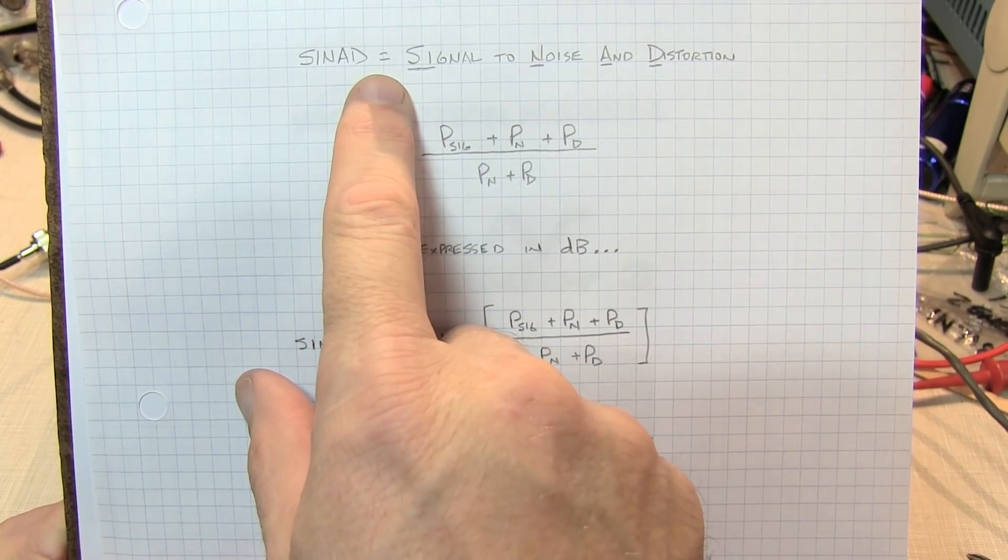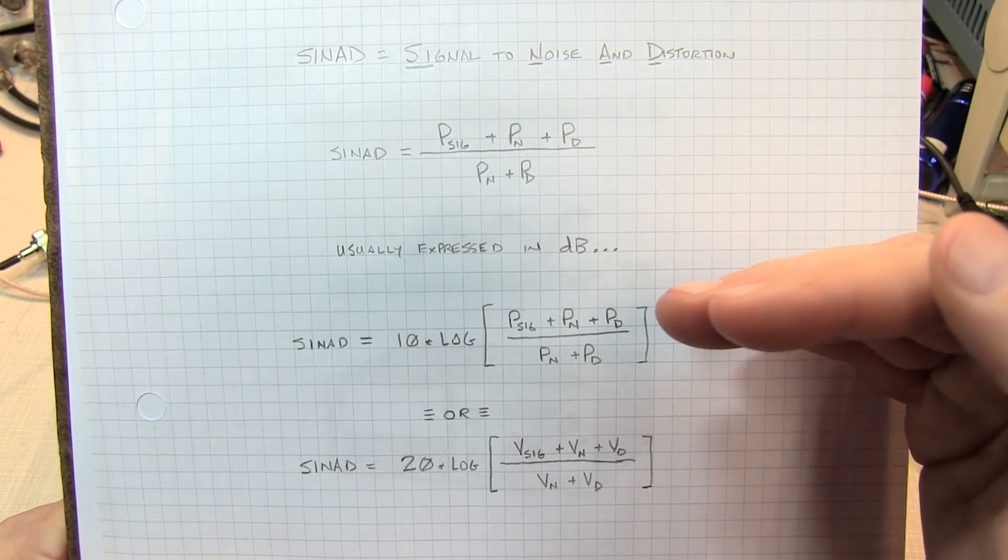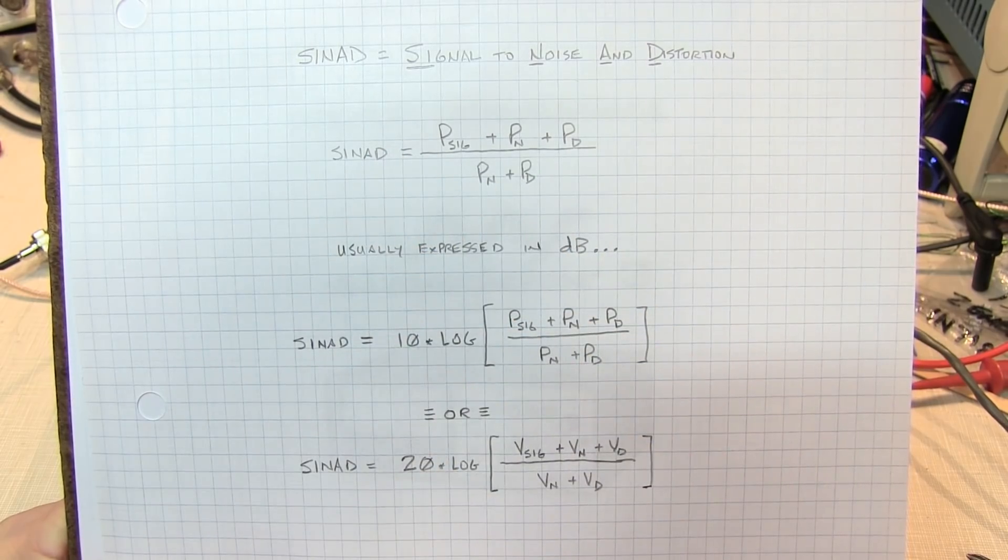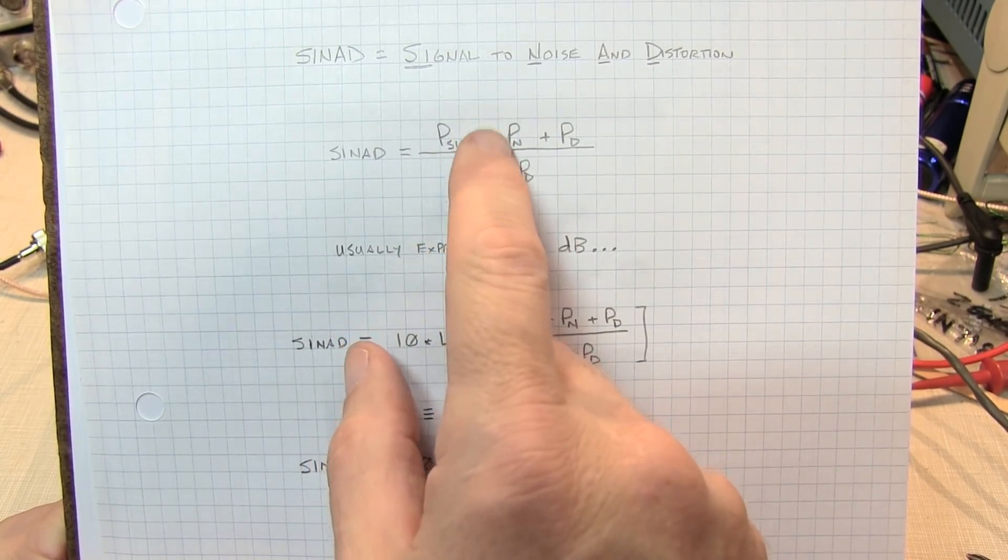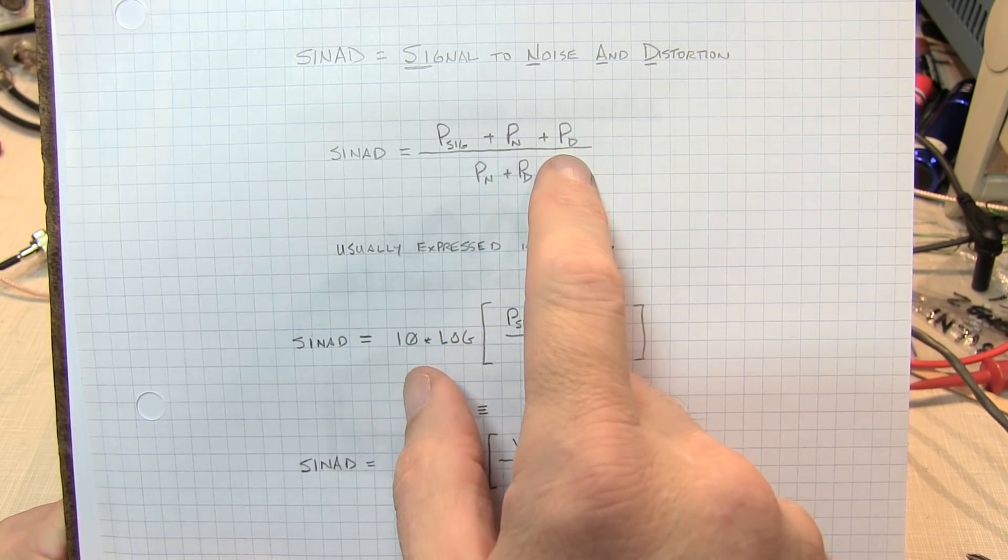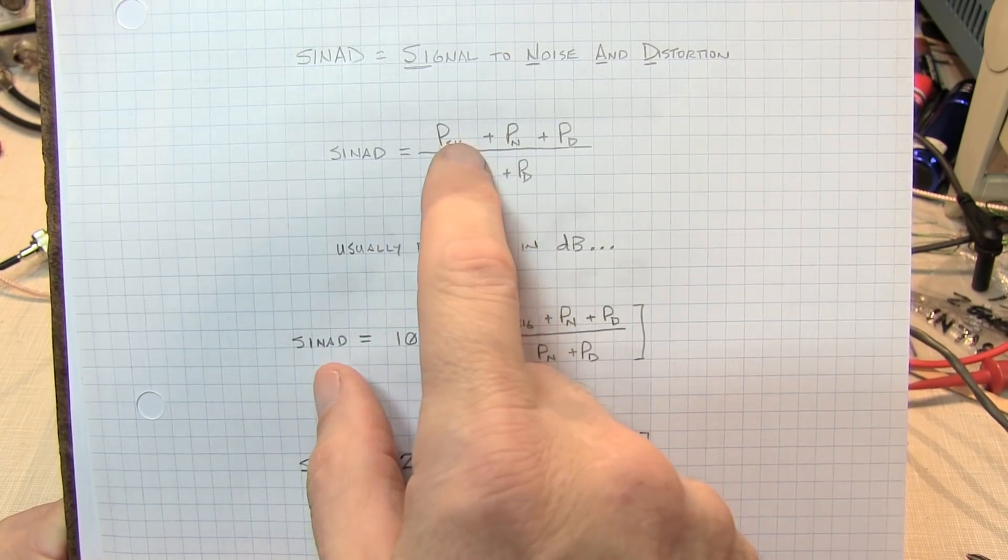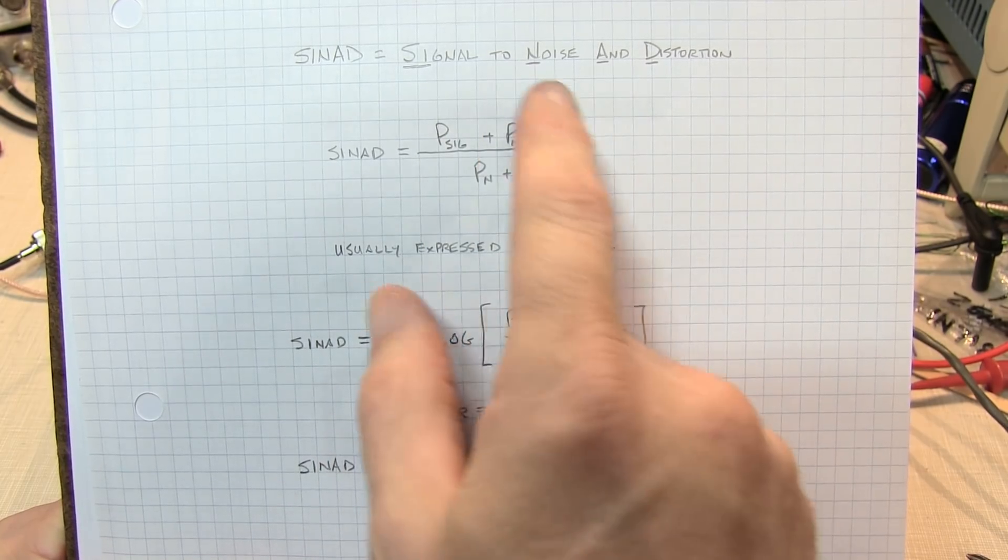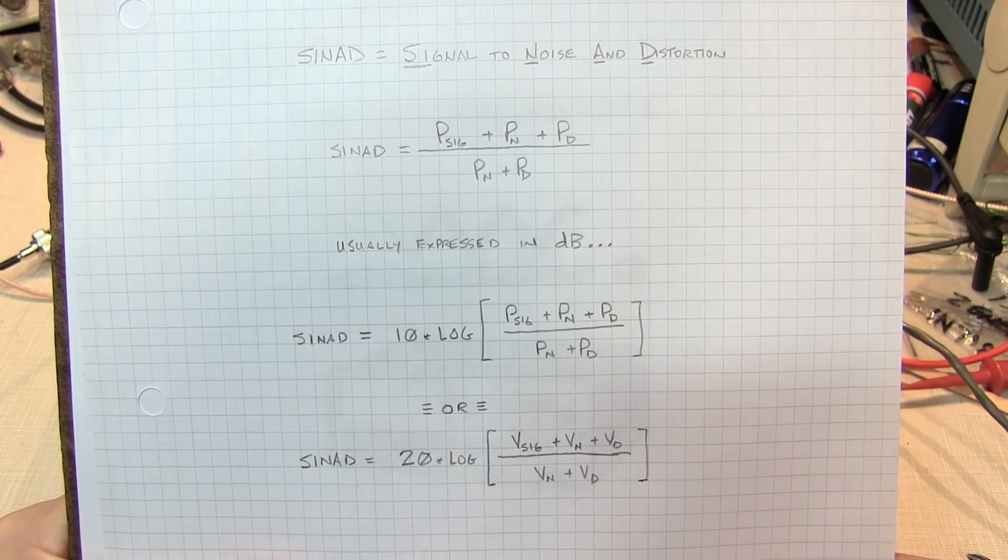Now, SINAD is used for FM receivers because as the signal level drops in a receiver, the signal-to-noise ratio degrades. Also when aligning an FM receiver, if the FM detector is not aligned properly, you can add harmonic distortion components to the signal. So by using the term SINAD, you can characterize both the signal-to-noise and signal-to-distortion with one measurement term. This is why it's typically used for FM receivers.